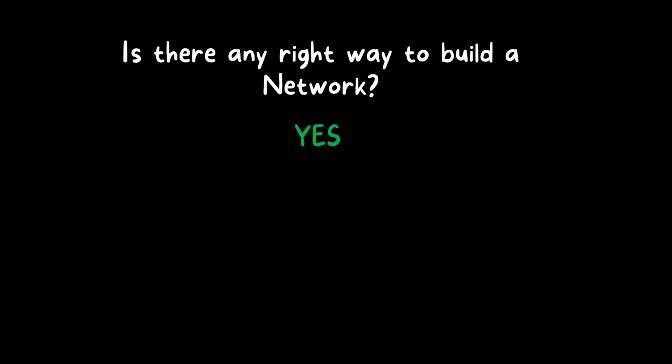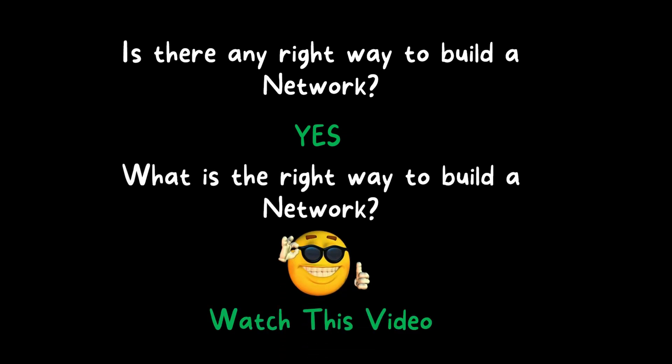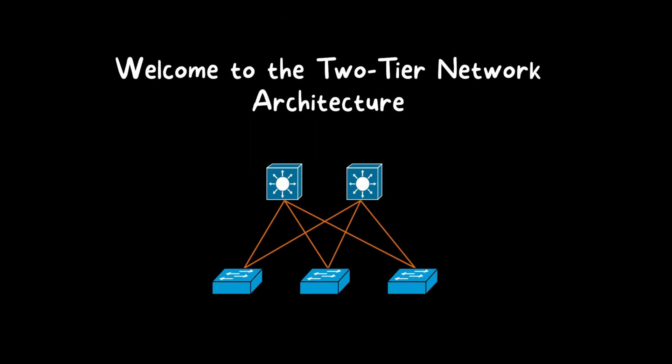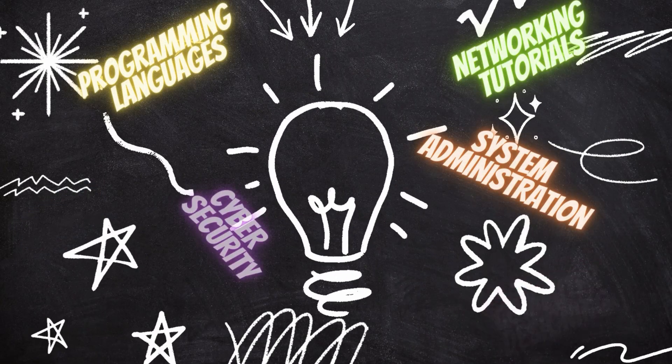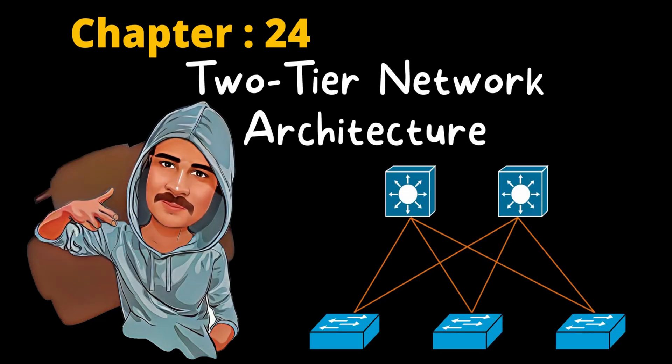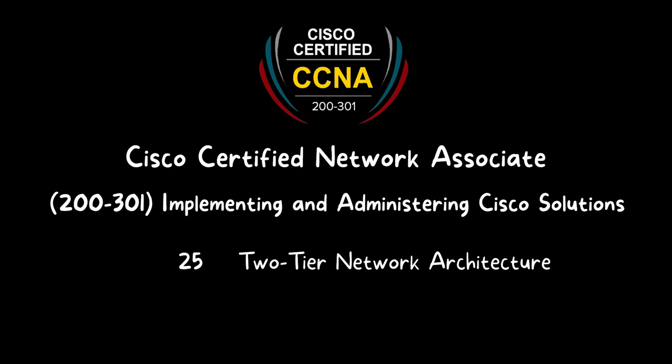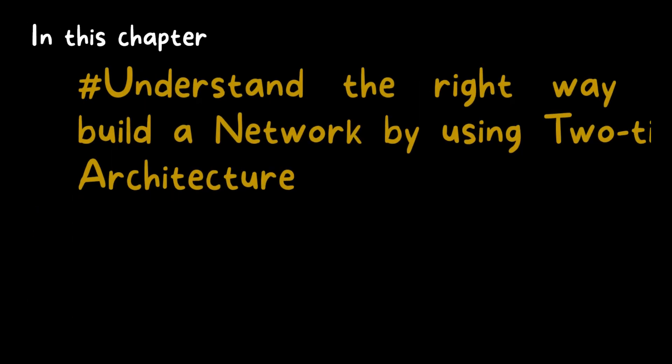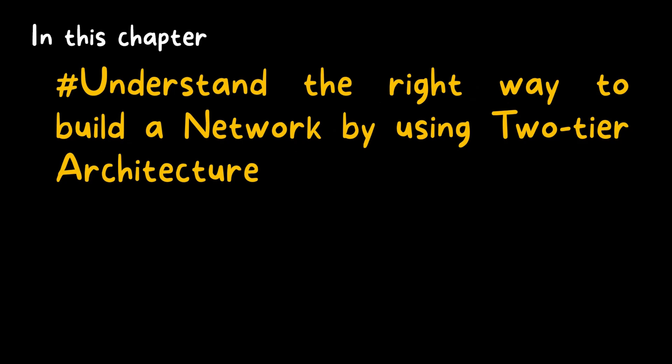Is there any right way to build a network? Yes, of course. Then what is the right way to build a network? Watch this video, I will show you. Welcome to CCNA 200-301, Implementing and Administering Cisco Solutions, Chapter 25: Two-Tier Network Architecture. In this chapter we will understand the right way to build a network using two-tier architecture.